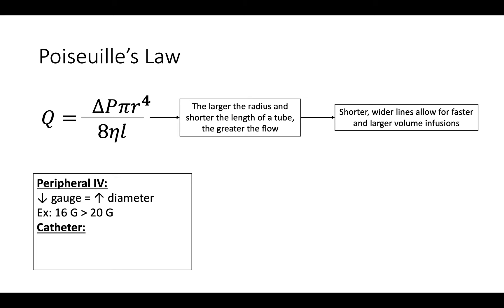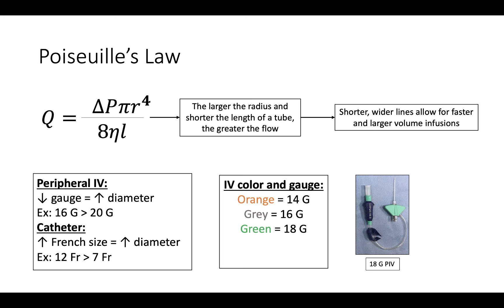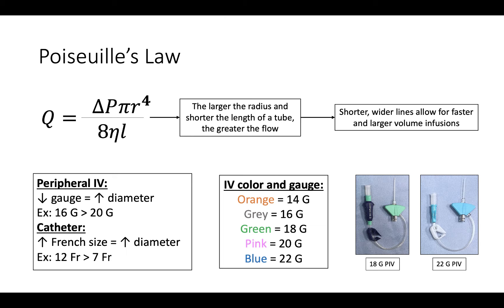For catheters, the higher the French size, the wider the diameter — for example, a 12-French is larger than a 7-French. If you are unsure of a peripheral IV's size, all peripheral IVs are color-coded based on their gauge: 14-gauge are orange, 16-gauge are gray, 18-gauge are green, 20-gauge are pink, and 22-gauge are blue.